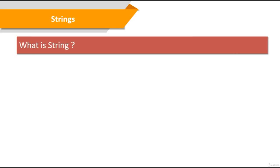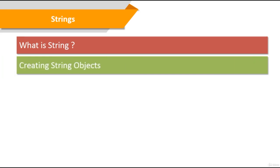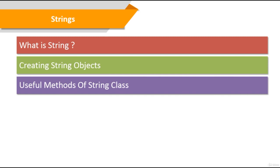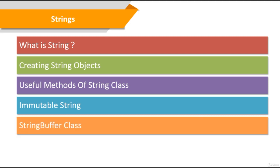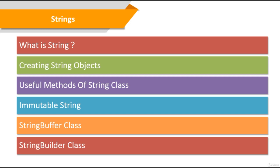In this section, we will finally learn strings in Java. First, we'll learn the String class in detail, and then we'll learn how to create a string object. Then we'll go over a bunch of useful methods for the String class. Then we're going to cover why String is immutable. Then we're going to introduce StringBuffer as a class and learn how to create a StringBuffer object. Then we will introduce the StringBuilder class and learn how to create a StringBuilder object.